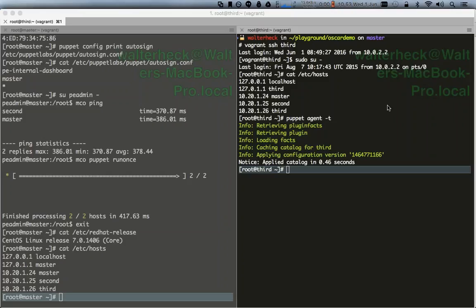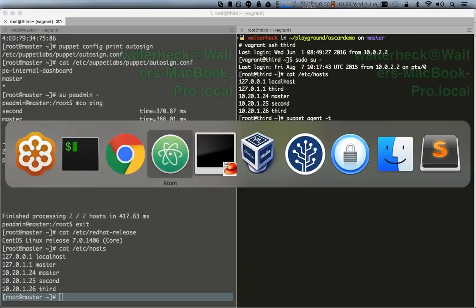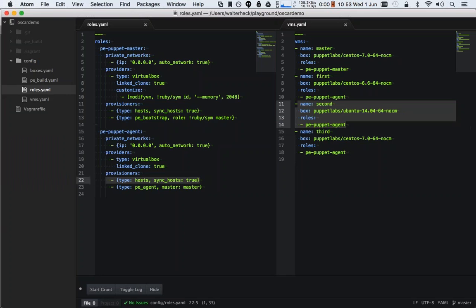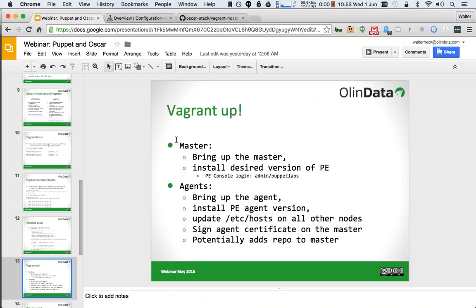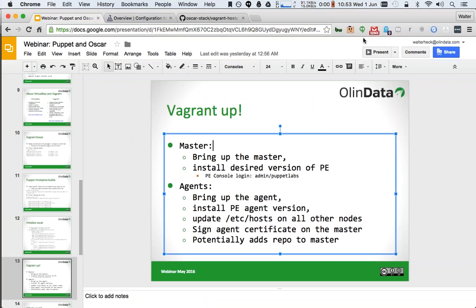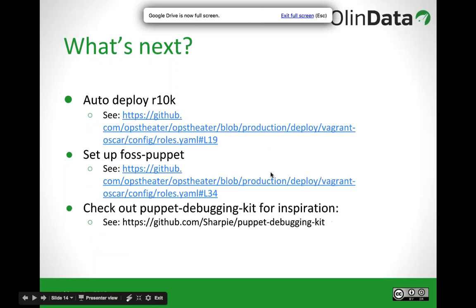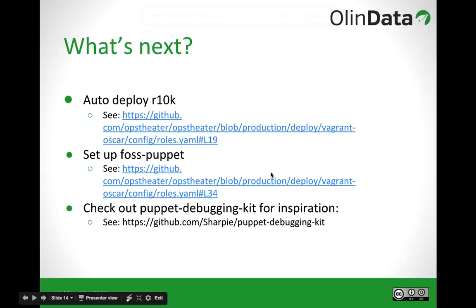The next question from Moses: does Oscar stack support R10K workflow? Not out of the box — but going back to my slides, the next topic is 'what's next': you can auto-deploy R10K or set up FOSS Puppet. I've included links to places where we do this on open source projects, so you can copy and paste the code that's being used there.